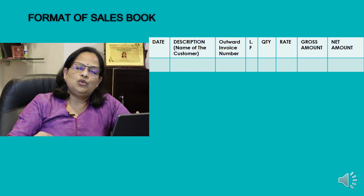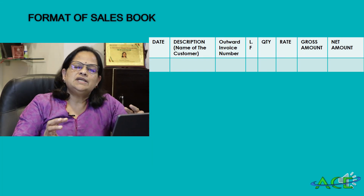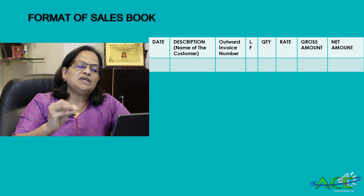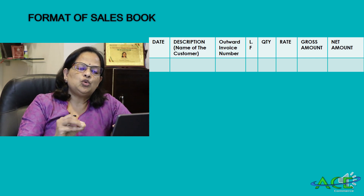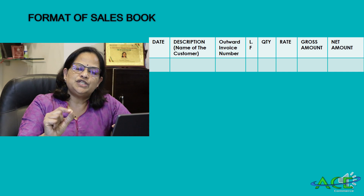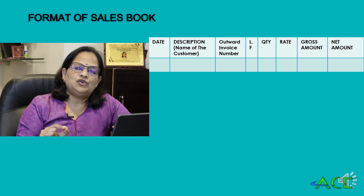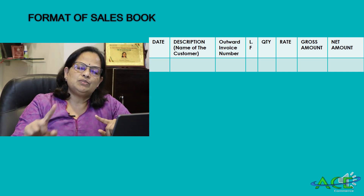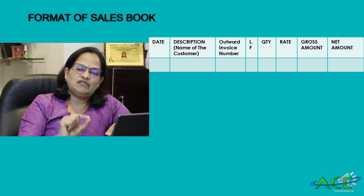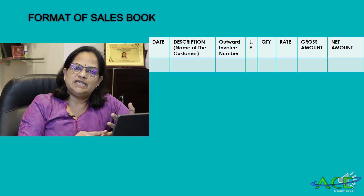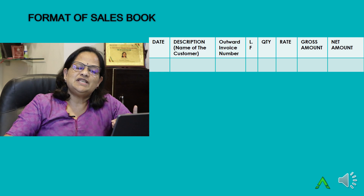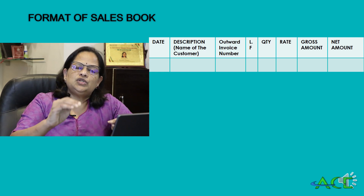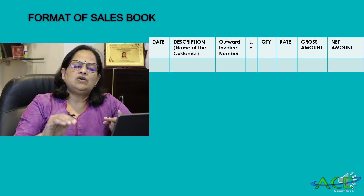The sales book has eight columns: date, description (name of the customer taking the item on credit), outward invoice number, ledger folio for reference when posting to the ledger, quantity, rate, gross amount, and net amount. Sometimes a trade discount is allowed, so both gross amount and net amount columns are maintained.